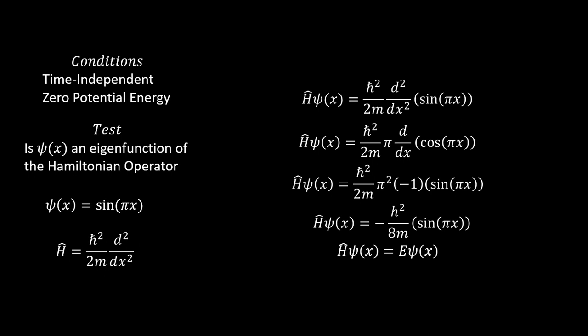If we just clean up some numbers with ℏ being Planck's constant over 2π, that allows us to simplify things to applying the Hamiltonian operator on ψ yields negative h² over 8m times sin(πx).